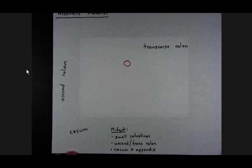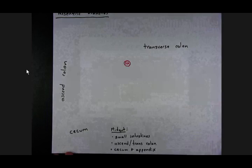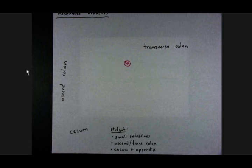Put a circle in, a red circle. I'm back to red now. And I'll just put SMA inside this circle to denote superior mesenteric artery.